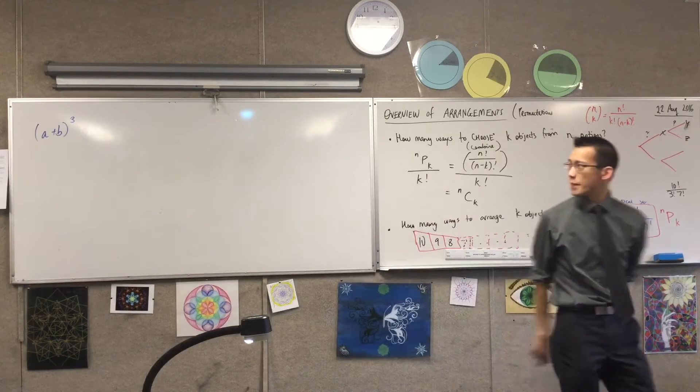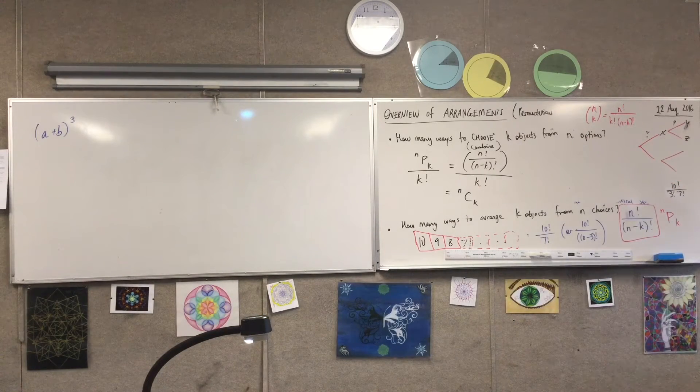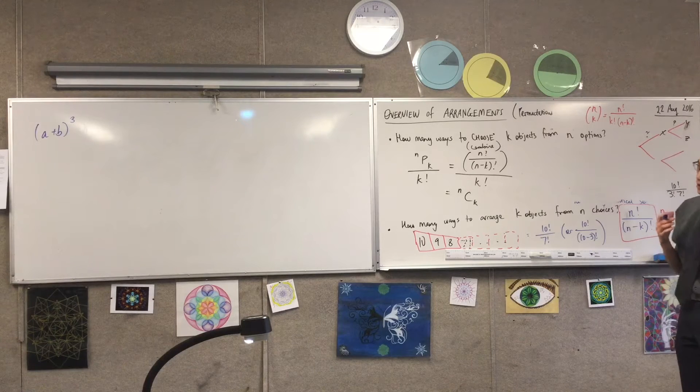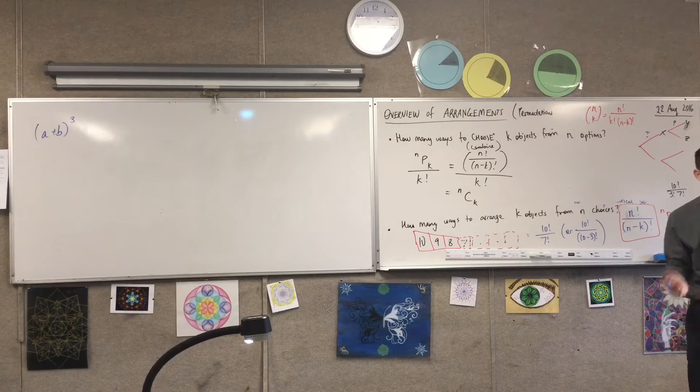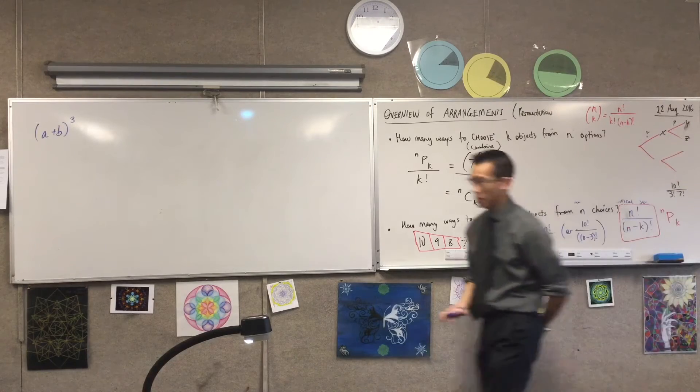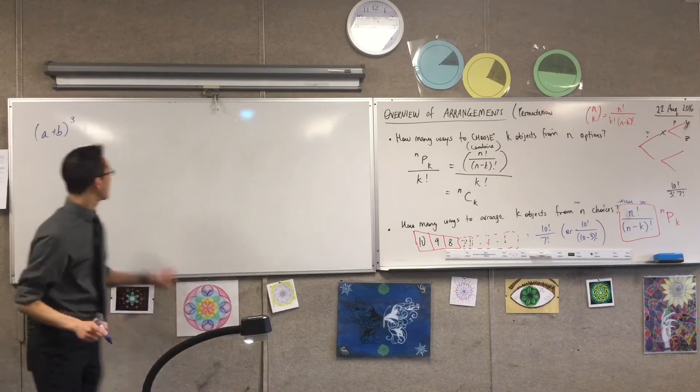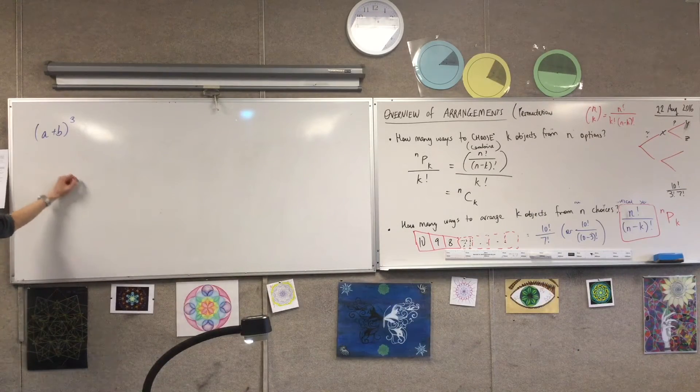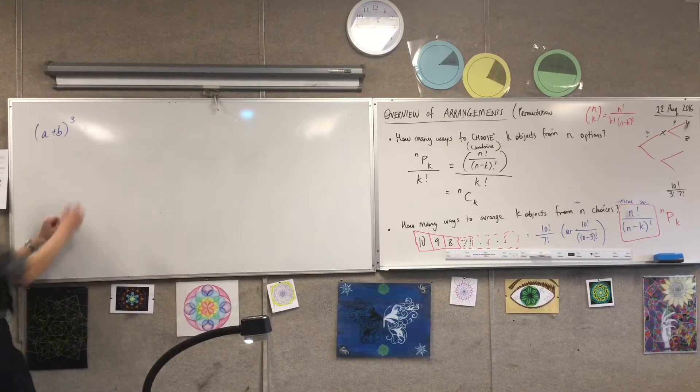Now, what does this mean? Because we know the binomial theorem, you guys can just expand this without even thinking. But just realize, what is this talking about? I've alluded to this already when we were talking about probability earlier.